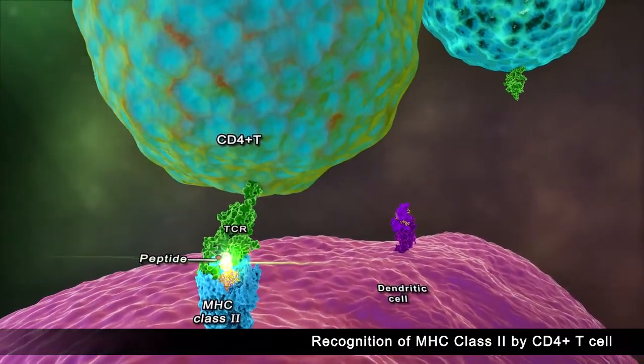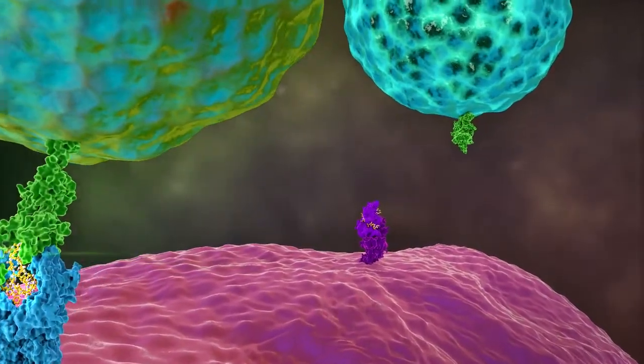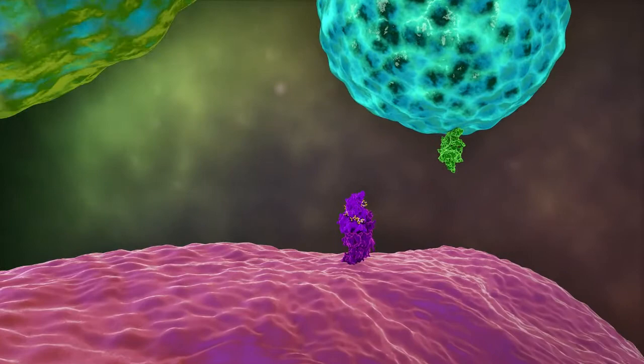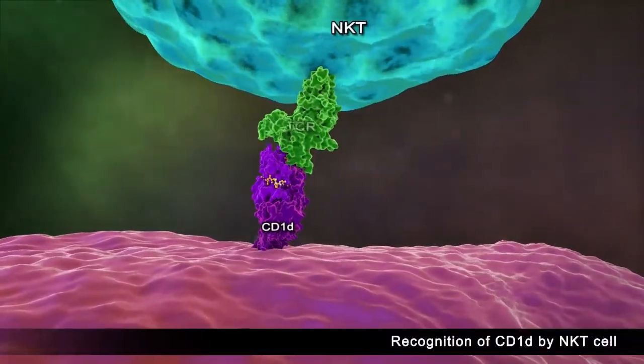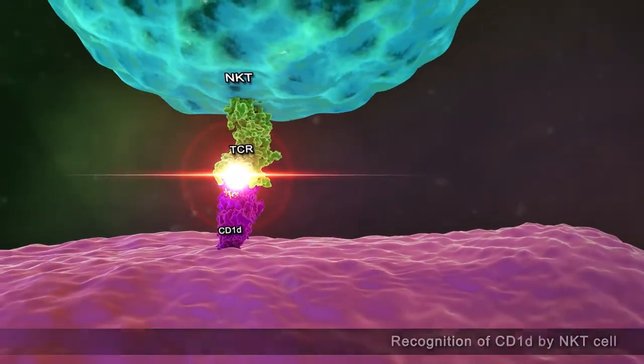CD4-positive T-cells recognize complexes of MHC class II and peptide on antigen-presenting cells. Natural killer T-cells recognize alpha-galactosilceramide presented on CD1D.